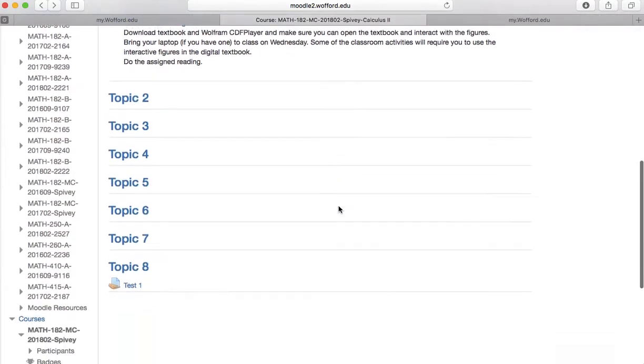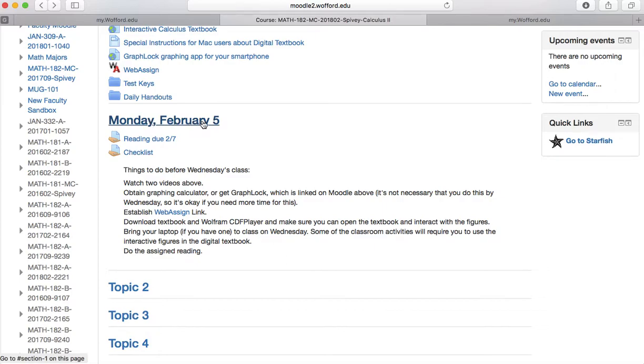And finally, I organize the Moodle site by day. So this is the first day of class, Monday, February 5th, and these are the assignments. So when we have class on Wednesday, it will go here and it will just sort of add stuff. I do want to point out that the reading is posted, so go ahead and do it. And this is a checklist of things that you ought to do before Wednesday's class. So you should watch the videos. This is one of them. You should get a graphing calculator or get GraphLock. And if you don't do this by Wednesday, it's okay, not a big deal. You should set up your WebAssign link by clicking on that WebAssign link up there and following the directions. You should definitely download the textbook and make sure it works. And on Wednesday, we're going to be using your computer. We're going to be using files from the textbook in class. So you should bring your laptop to class on Wednesday. And obviously, you should do the assigned reading.